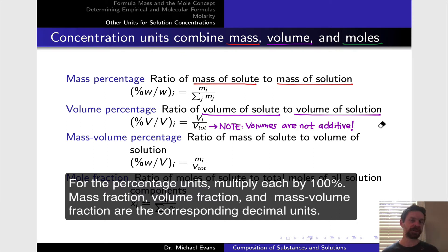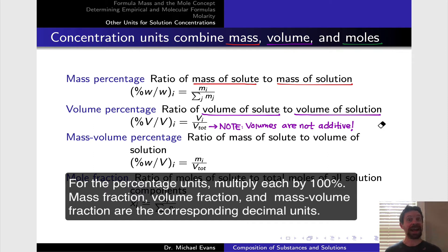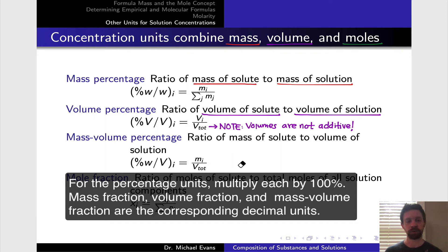If we took five milliliters of methanol and dissolved it in 100 milliliters of water, the volume of the final solution would not be 105 milliliters. This is fairly easy to test at home with things like vinegar and tap water. Solution volumes are not additive because upon mixing, volumes change. So here we just use the total volume of the solution in the denominator — the volume of the solute divided by the total solution volume.